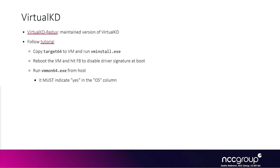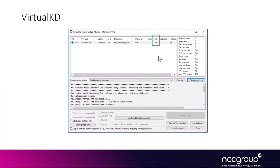The first method is VirtualKD. There has been a fork called VirtualKD Redux, which is maintained, and I would recommend using that. You follow the tutorial — copy some tools to the target VM, run the install executable, which installs a driver, then reboot the virtual machine. At boot, you hit F8 to disable driver signatures. On the host, you run the VMMon executable and make sure it shows the VM is detected, indicated by 'yes' in the operating system column.